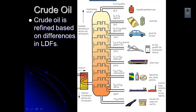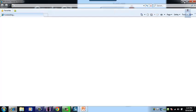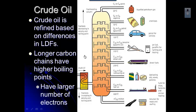And then as the chains get shorter, there are fewer and fewer electrons, fewer LDFs. And so they go higher up the column and they get pulled off depending on their boiling point. So you get things like diesel fuel. As you go further up and the carbon chains get even shorter, you get gas. And even shorter, you get liquefied petroleum gas, those sorts of things that we use around the house. So longer carbon chains have higher boiling points because they have more electrons, more carbons, more hydrogens, more electrons, stronger LDFs.